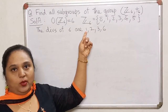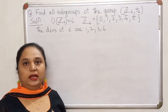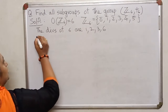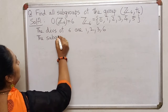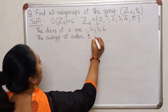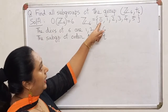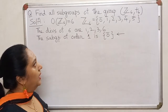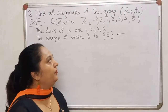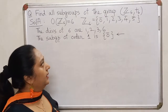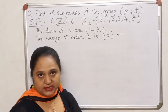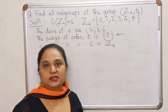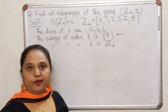Let us first look at the subgroup of order 1. If our subgroup has to have only one element, then obviously it must have the most important element and nothing else. The most important element in any group is the identity. So the subgroup of order 1 will be the set containing only the identity, which in this case is 0 bar. Likewise, if we want a subgroup of order 6, the only subset of Z6 of order 6 is the whole of Z6. Therefore, the subgroup of order 6 is the improper subgroup Z6 itself.